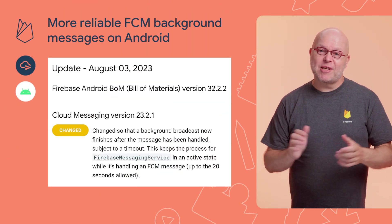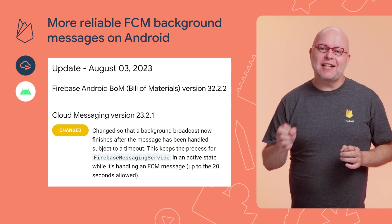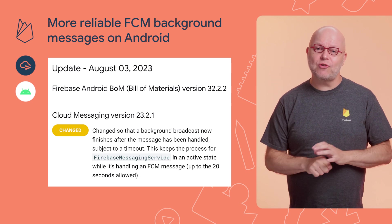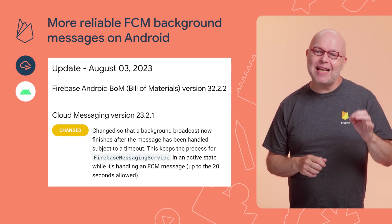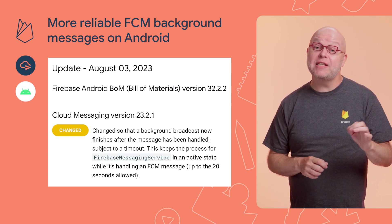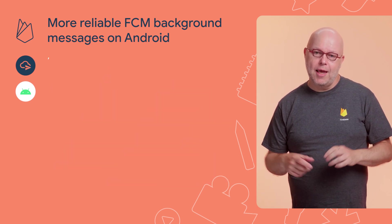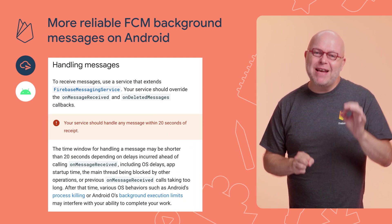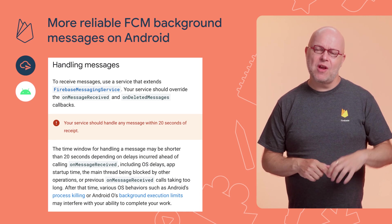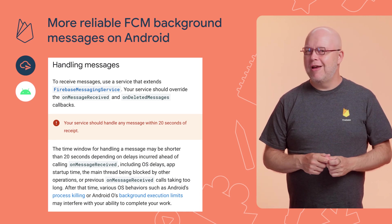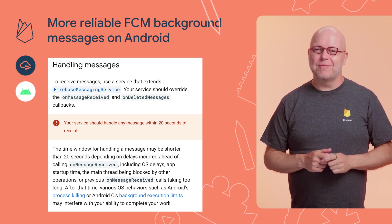And speaking of Firebase Cloud Messaging, our SDK for Android changed the way that it initializes its broadcast receiver so that your code now has a better chance of handling messages that are received while the user is not actively using your app. The SDK now keeps the Firebase messaging service active for up to 20 seconds while your code handles the message. Upgrade to BOM version 32.2 or later for this change.